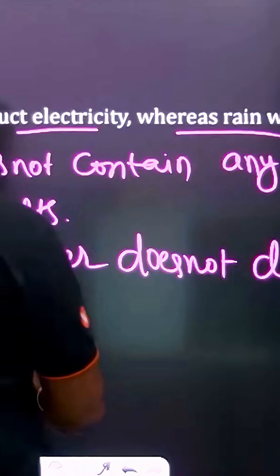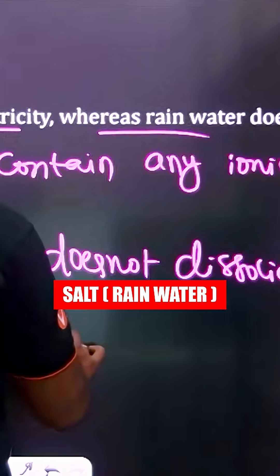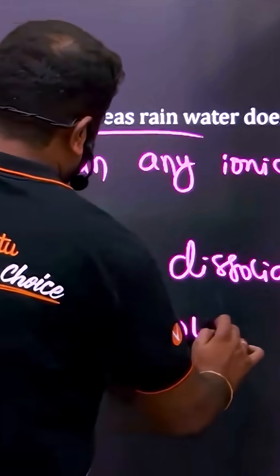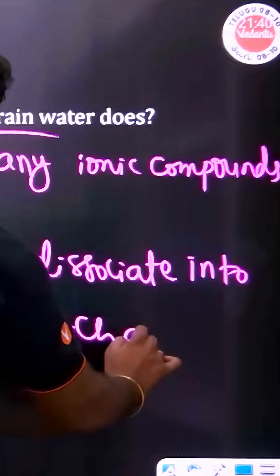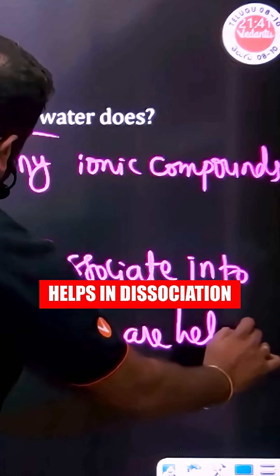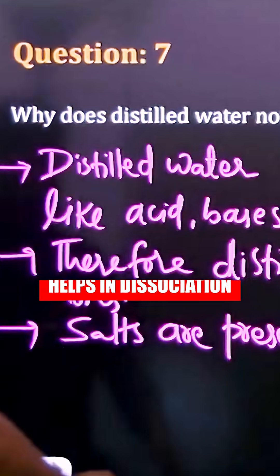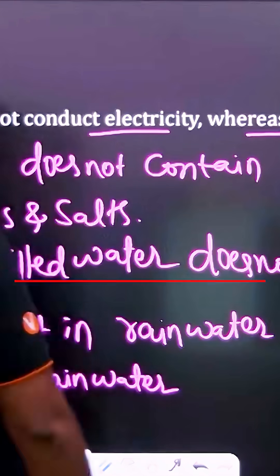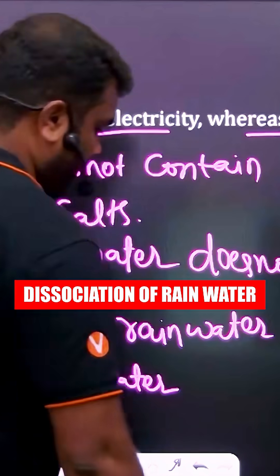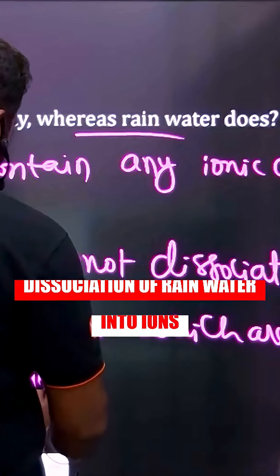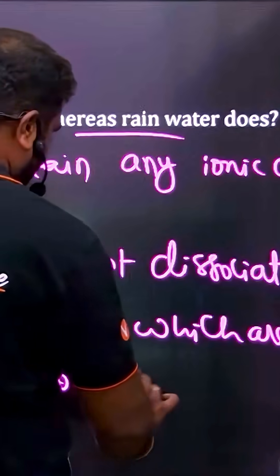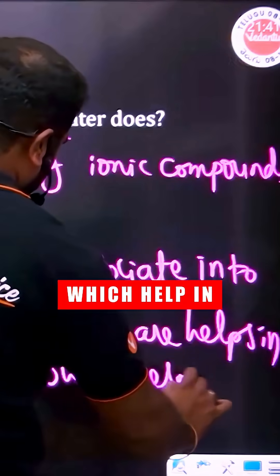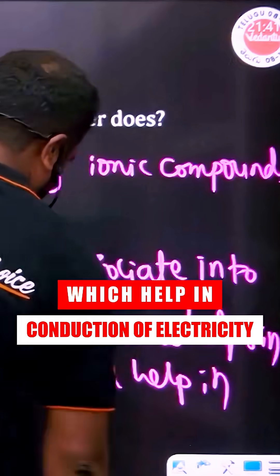Salts are present in rainwater, which help in the dissociation of rainwater into ions, which help in conduction of electricity.